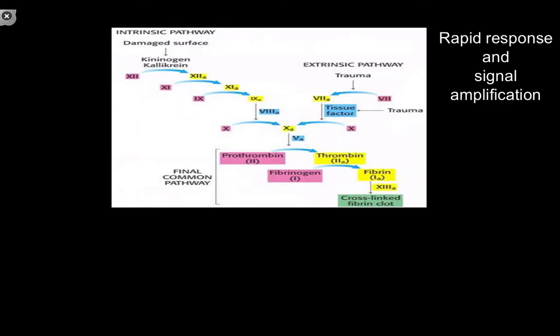Another example of extracellular proteolytic cleavage cascades leading to a rapid response in signaling is the clotting cascade. Either the intrinsic pathway or the extrinsic pathway, through enzymatic cascades — or in this case the glycoprotein tissue factor — they all converge on this final common pathway.